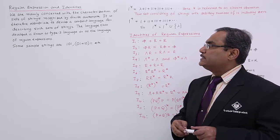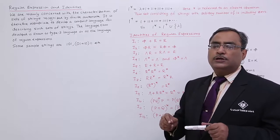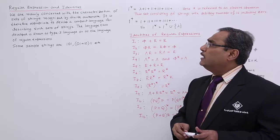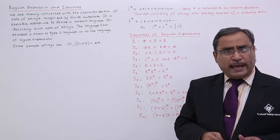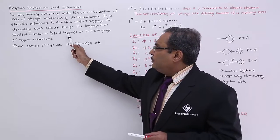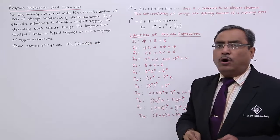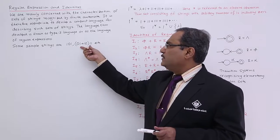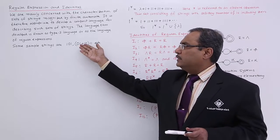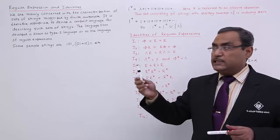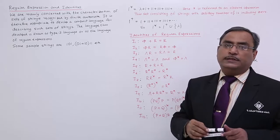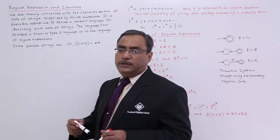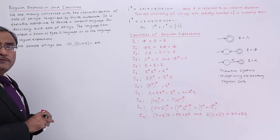The language thus developed is known as a type 3 language — what is a type 3 language? We have discussed that in our Chomsky classification of languages. It is known as a type 3 language, or as the language of regular expressions. Let us suppose these are the sample strings, and if they can be expressed in the finite automaton, then obviously that will be a good example of regular expressions. Let me draw the respective finite automaton for them.